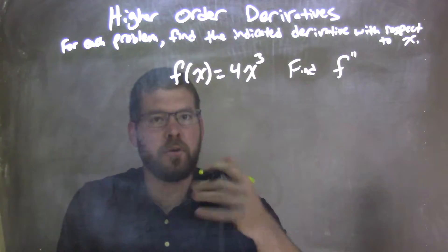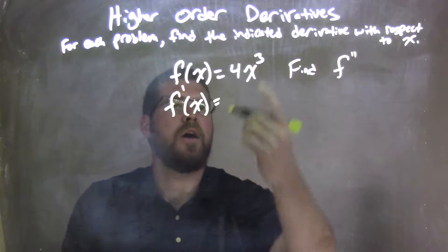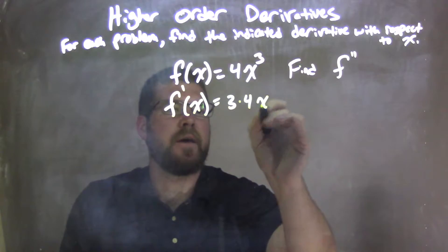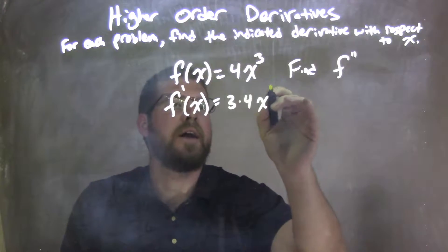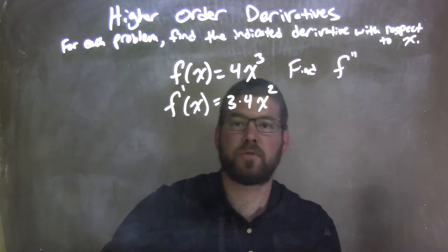Well, first we need to find the first derivative. When we find the first derivative, f prime of x, we're going to use the power rule. The 3 comes down, 3 times the 4x to our exponent, which is 3 minus 1. We subtract 1 from the exponent using the power rule, and that gives us a 2. So we have 3 times 4x squared.